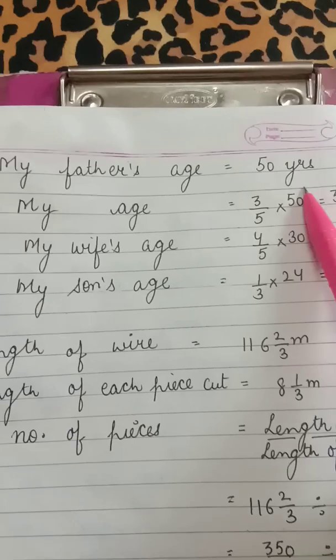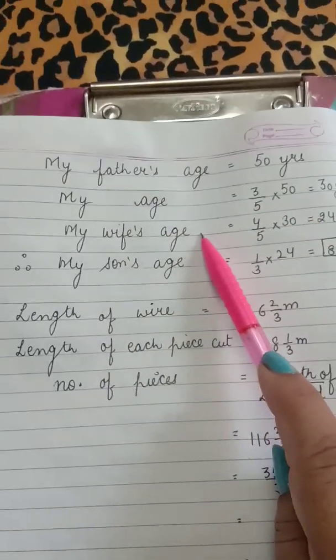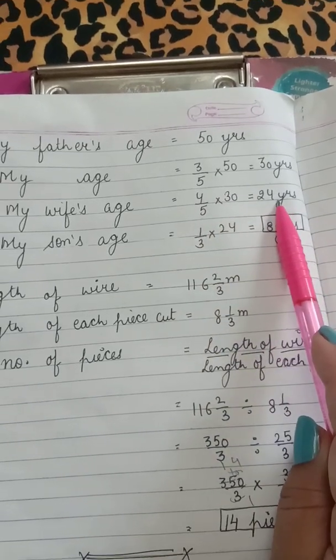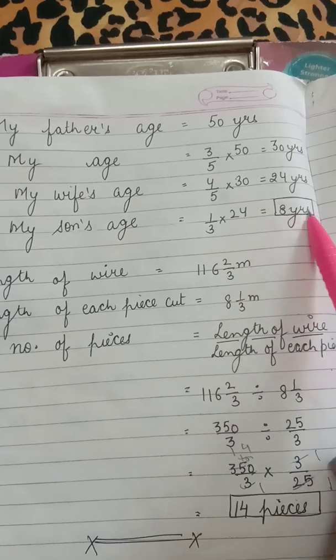So my father is 50 years old. My age is 3 by 5 of the father age, which is 30 years. My wife's age is 4 by 5 of my age, which is 24 years. And my son's age is 1 by 3 of my wife's age, which is 8 years. Now last question.